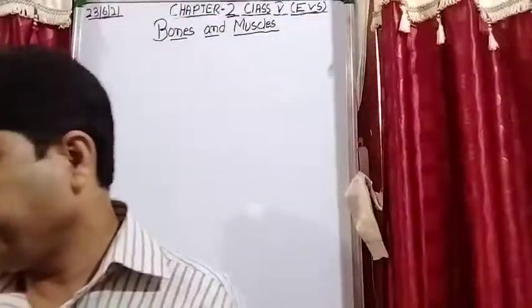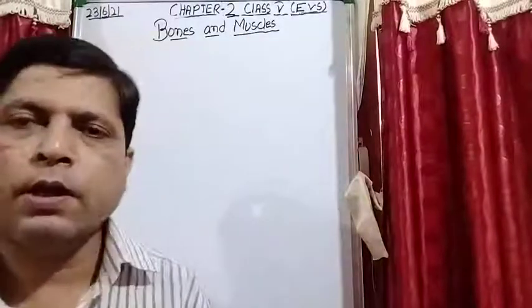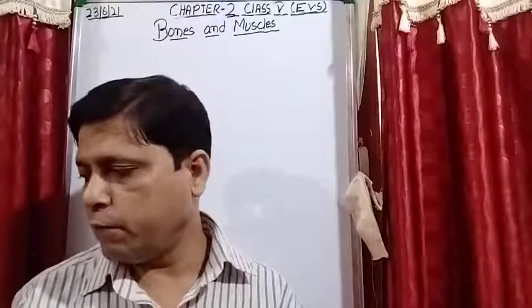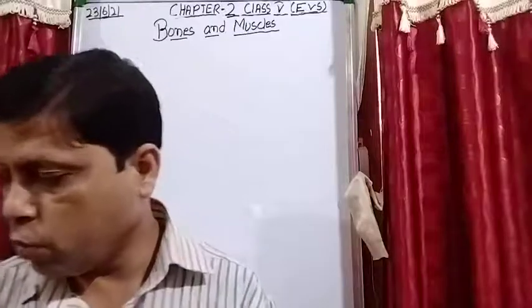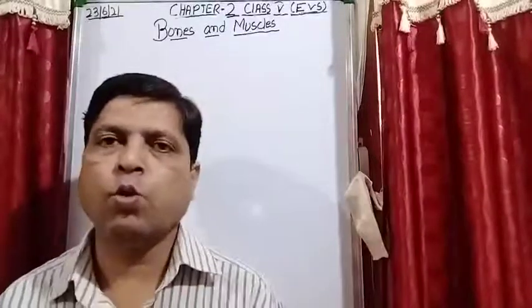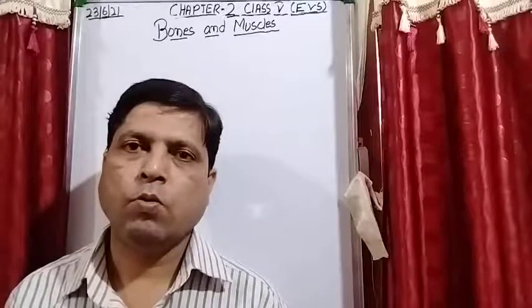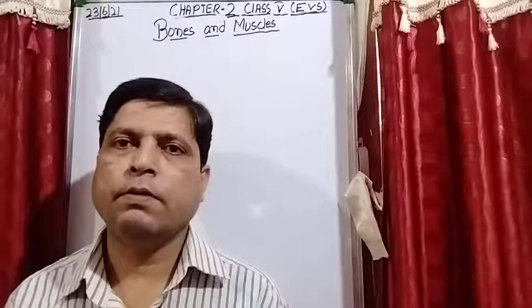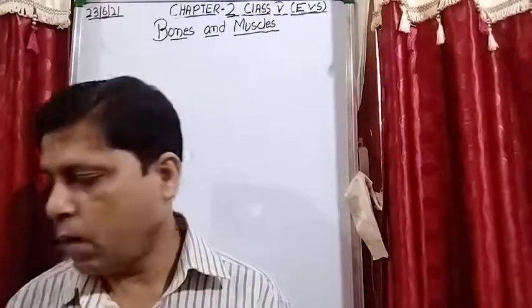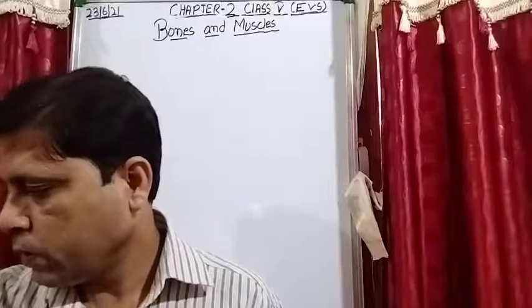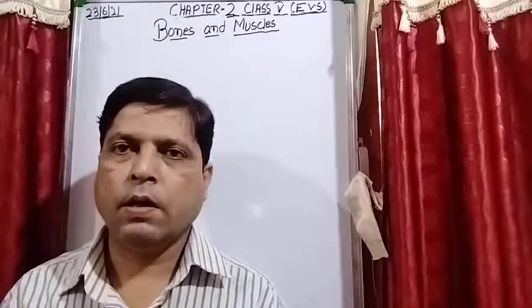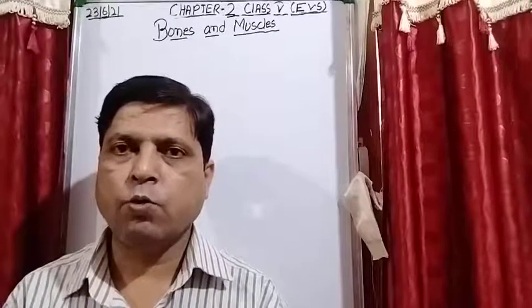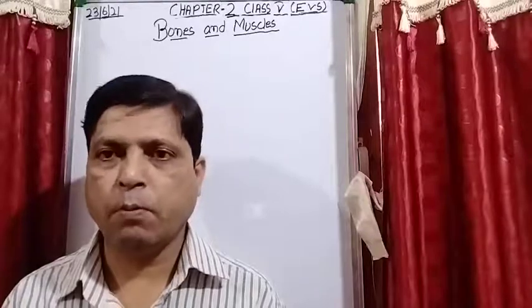Let's do a little recapitulation of what we covered in the previous video. In the previous video, I gave you an explanation of joints. So what is a joint? Joints are a place where two or more bones meet. Yesterday I explained you about the joints, and today I will explain to you different types of joints found in our body.